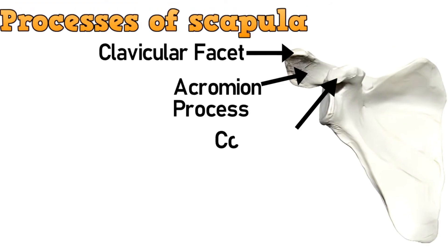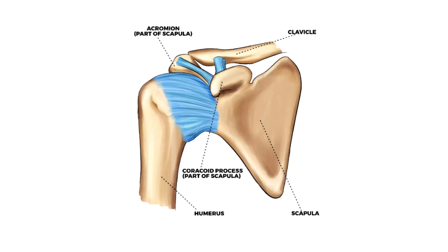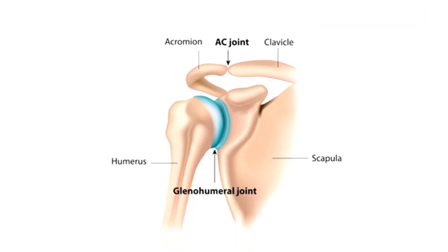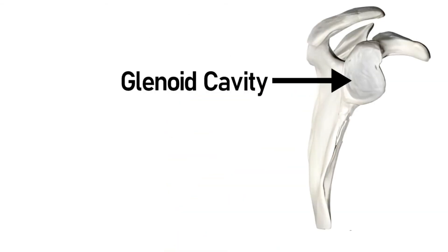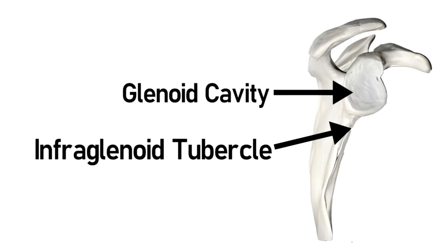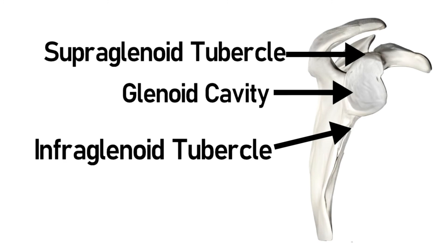The third process is the coracoid process. It is a hook-like projection which lies just underneath the clavicle. The lateral angle bears the glenoid cavity, which articulates with the head of humerus to form the glenohumeral joint. Just below the glenoid cavity is the infraglenoid tubercle, which gives attachment to the long head of triceps brachii. And just above the glenoid cavity is the supraglenoid tubercle, which gives attachment to the long head of biceps brachii.